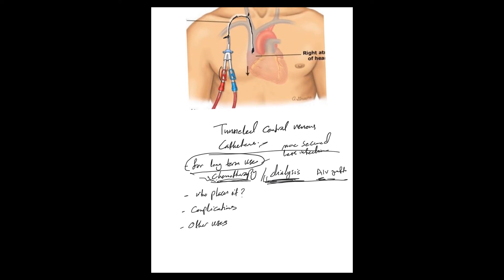To summarize the procedure: it's two cuts — one here for entry into the vein, then tunneled under the skin until the exit. Most of the time these are dual lumens, though they can be triple lumen as well, and the catheter sits underneath the skin. Who places it? Usually general or vascular surgery, or IR — interventional radiology.